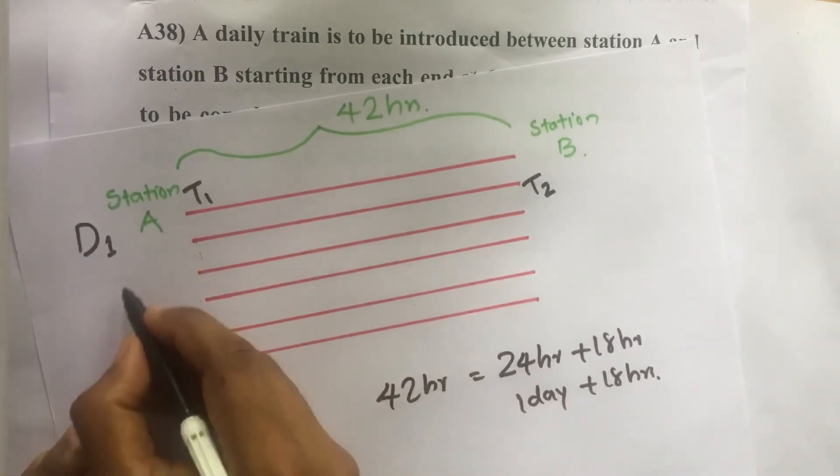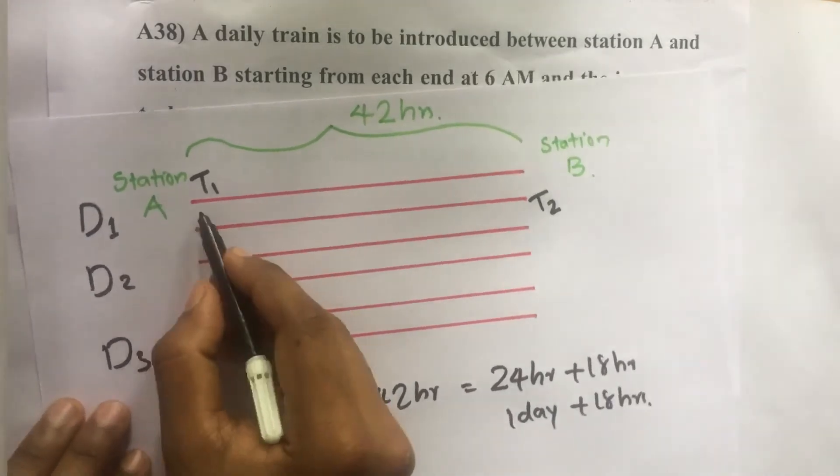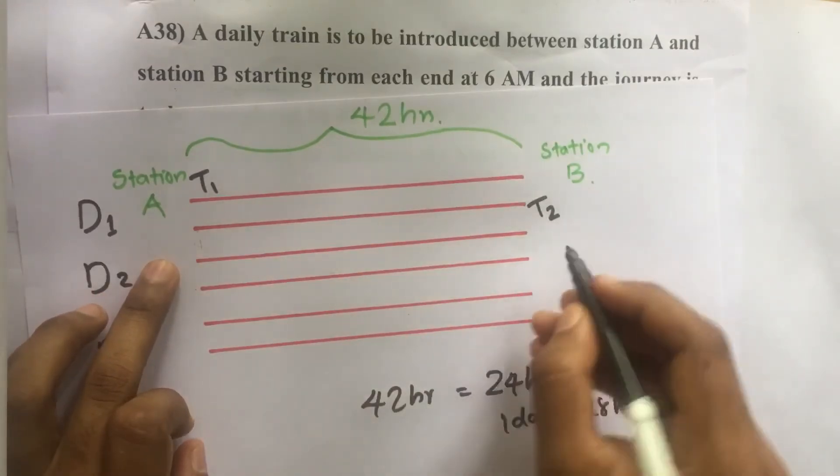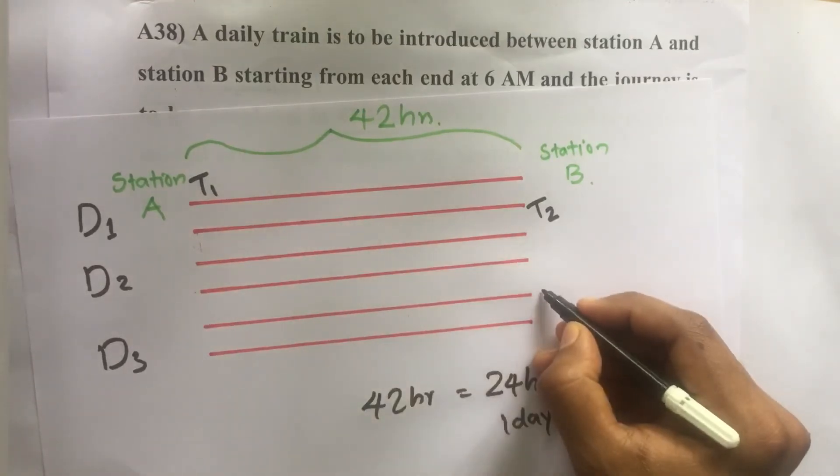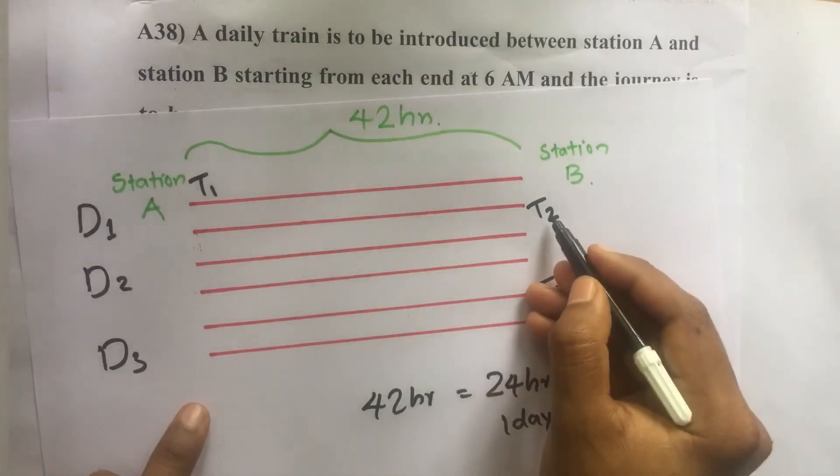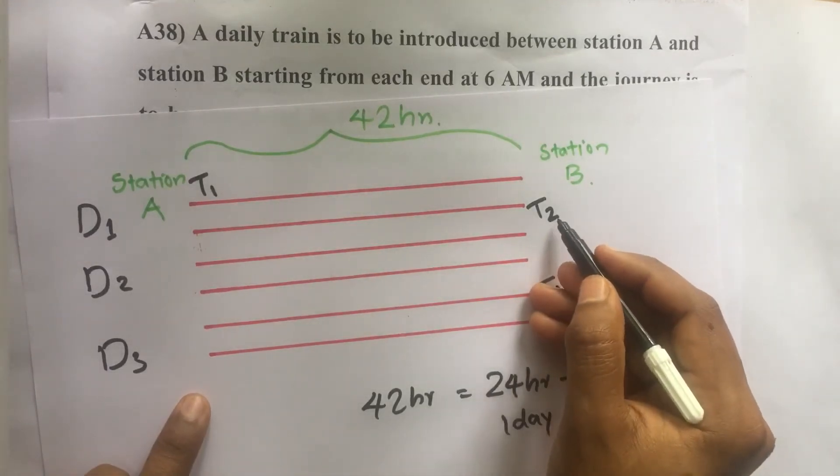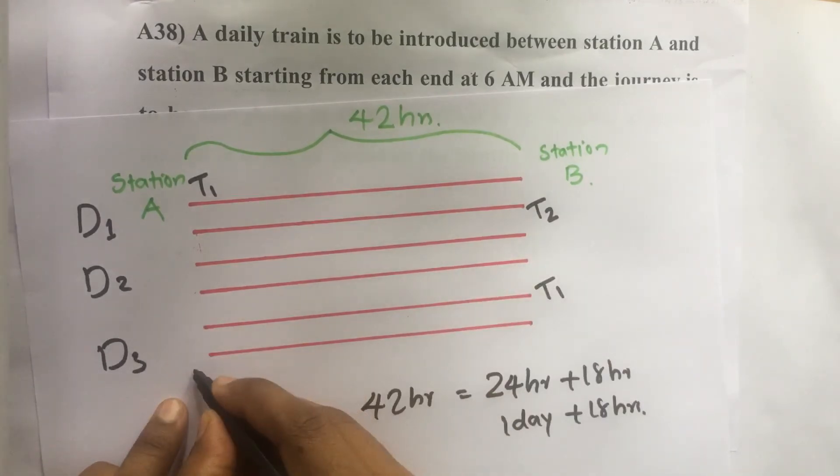So this will be day 2, day 3. This T1 reaches at B only after 2 days, that means on day 3. Similarly this T2 reaches at station A only after 2 days, that is on day 3.